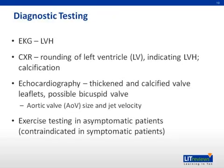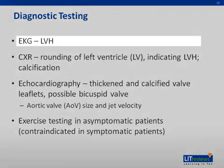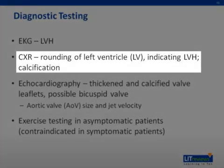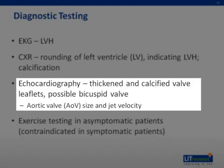Diagnostic testing for AS is aimed at identifying both the aortic stenosis and the compensatory mechanisms. EKG usually shows left ventricular hypertrophy, though this is a nonspecific finding. Chest x-ray is typically normal when AS is mild to moderate in severity, but can show rounding of the left ventricle due to LVH in severe disease, or calcification of the valves in rare cases. Echocardiography is typically the study of choice for diagnosis and monitoring, providing accurate and noninvasive assessment of valve morphology, including whether the valve is tricuspid or bicuspid and the extent of calcification.